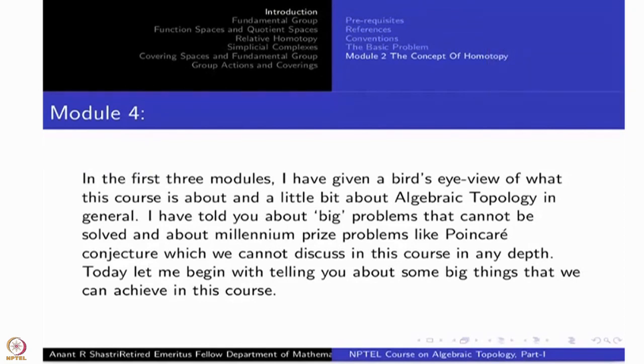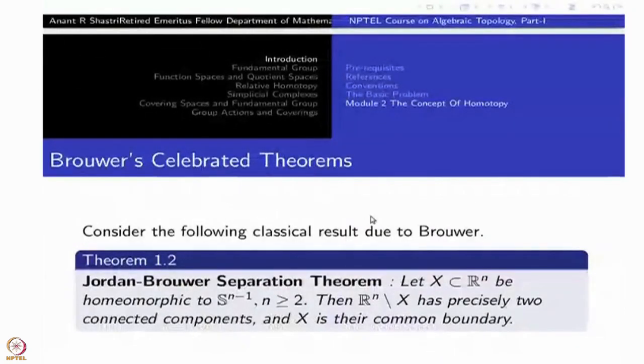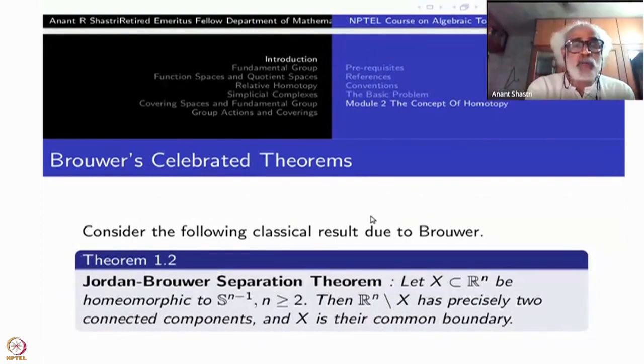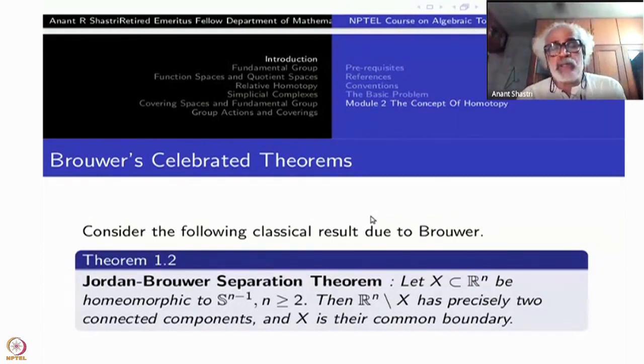This is called Brouwer's Celebrated Theorems. There are two of them here. One is the Jordan-Brouwer Separation Theorem, which is the Jordan comes here for n equal to 2. For higher things it is Brouwer. That is why it is Jordan-Brouwer Separation Theorem.